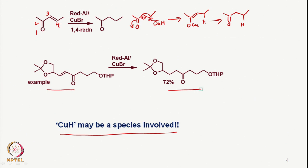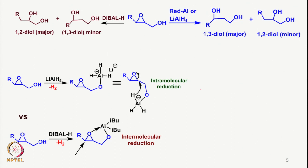There is another interesting, very specific and selective reduction — that of epoxy alcohols. These 2,3-epoxy alcohols are very easily available via Sharpless epoxidation of the corresponding allylic alcohol. Therefore, the utility of these 2,3-epoxy alcohols becomes very important, and their reduction to give the corresponding 1,2-diol or 1,3-diol is important.